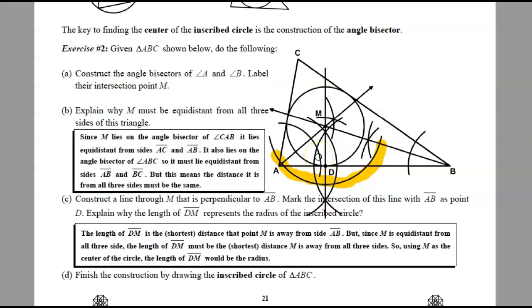All right, next thing. So explain why the length of DM represents the radius of the inscribed circle. So DM is the shortest distance from M to side AB, because the shortest distance is always perpendicular. So we have that established. Then we look at the fact that point M is also the same distance to AC and to BC. Therefore, we know it's a radius in all directions, and it will create an inscribed circle.